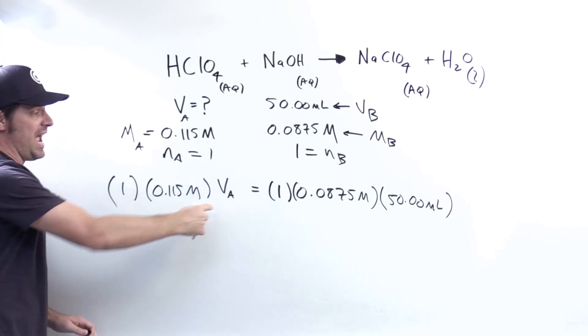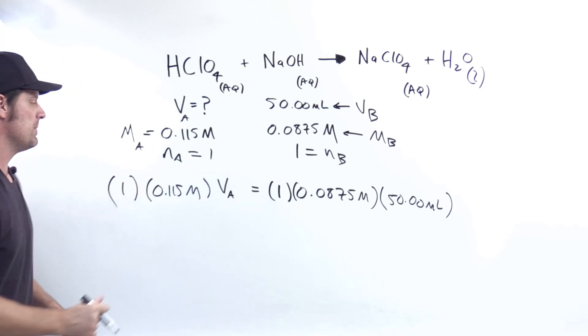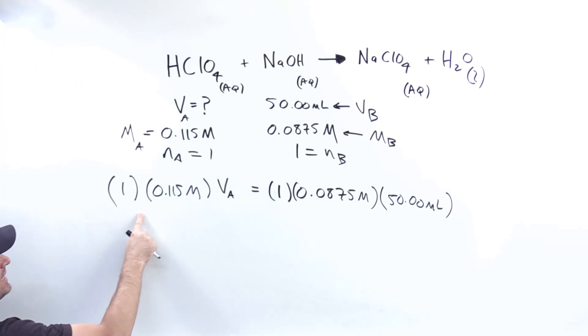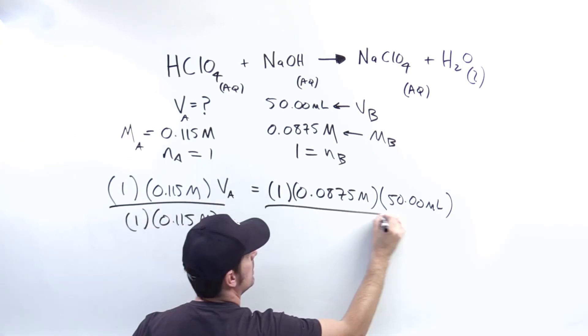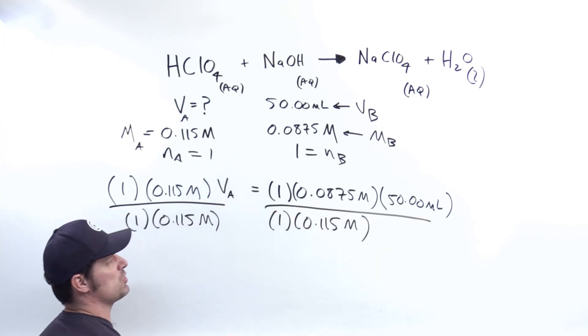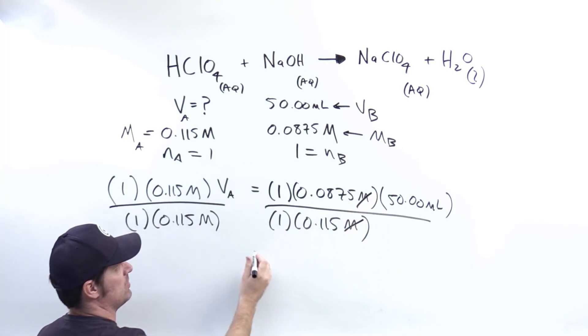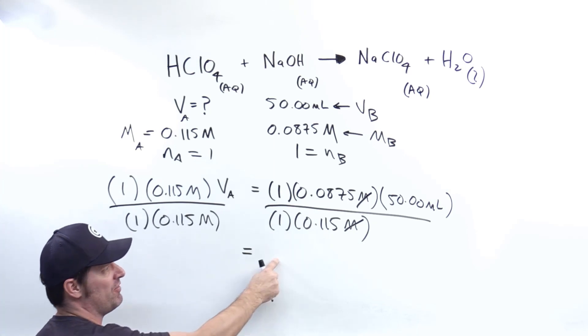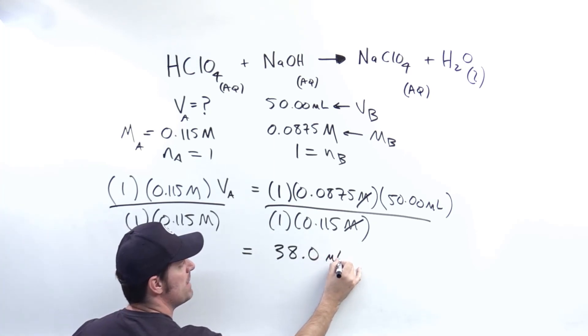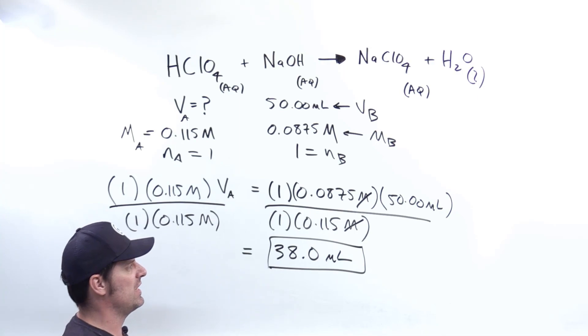In order to solve for VA, the acid's volume for this particular system, I'm going to divide both sides by this part right here. I'm being a little fast and loose with my units. Nevertheless, you can see that these capital M's for molarities cancel each other out. Ultimately, when you plug and chug in your calculator, it simplifies to 38.0 milliliters, which I've rounded to three significant figures.